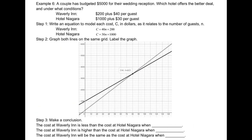Example 6. A couple has budgeted $5,000 for their wedding reception. Which hotel offers the better deal and under what conditions? At Waverly Inn, they charge $200 plus $40 per guest. At Hotel Niagara, they charge $1,000 plus $30 per guest. Let's model the situation using a linear system. Let C represent the total cost in dollars and n represent the number of guests. At Waverly Inn: C equals 40n plus 200. At Hotel Niagara: C equals 30n plus 1,000.